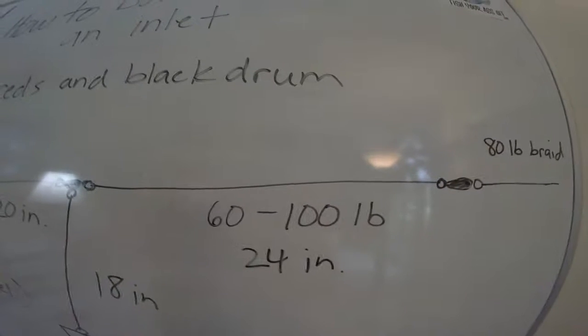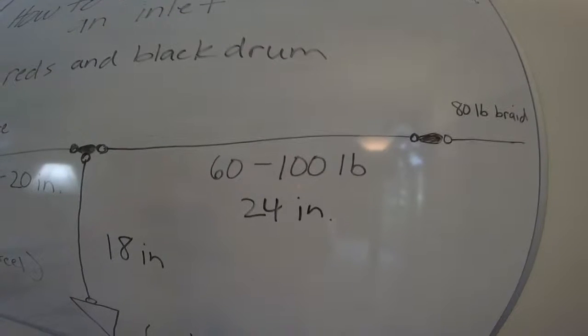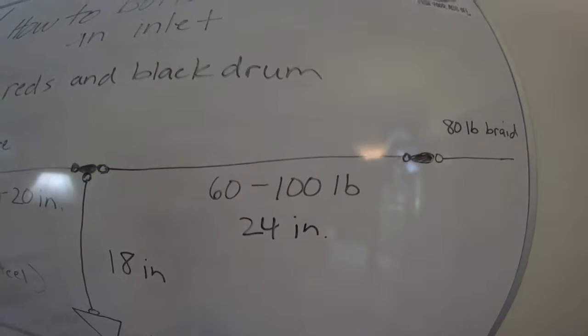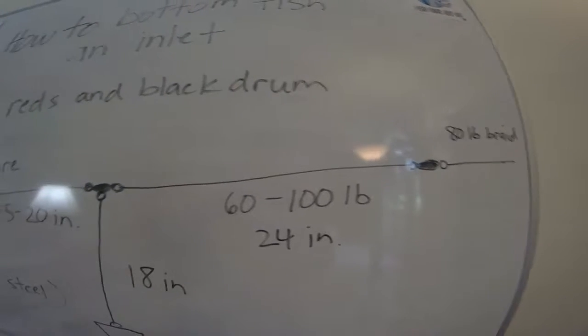And then again, however big of drums or whatever you're fishing for—those big black drums, they might get a hundred pounds, 90, a hundred pounds in there. So that's a big old piece of mono right there too.